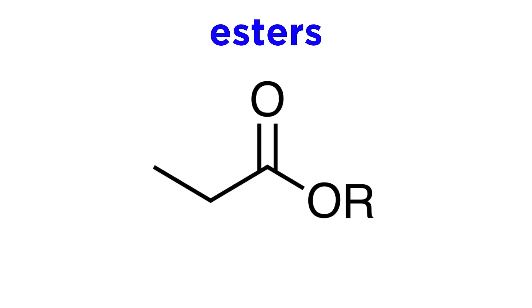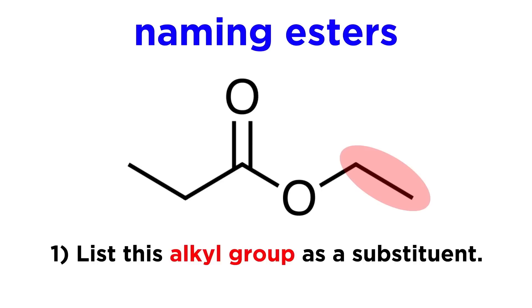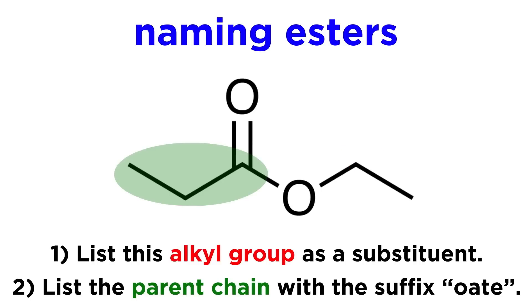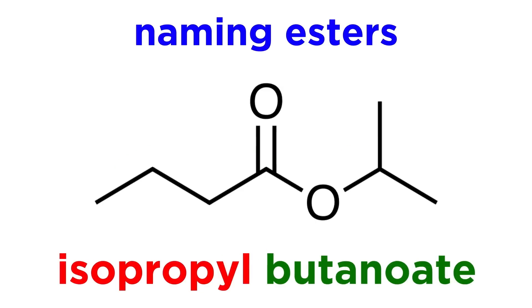Next, let's look at esters. These are similar to carboxylic acids, except that instead of OH next to a carbonyl, we will have OR. So rather than a hydrogen atom, the molecule continues with more alkyl of some kind. When we name these, we will name this alkyl group first, which is bound to the ester oxygen as a substituent. Then we refer to the parent chain using the suffix -oate. So here, because this group has two carbons while the main chain has three carbons, this will be ethylpropanoate. This will be isopropylbutanoate, and so forth.